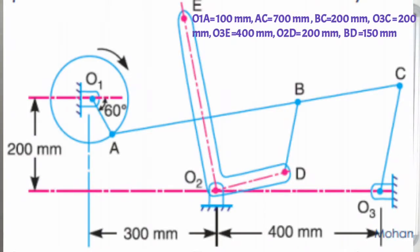We join AC and O3C. BC distance is 200 millimeters, so at 4 centimeters from point C we mark point B. For point D, distance BD = 150 millimeters, so we take B as center and mark an arc. Then with O2 as center and O2D = 200 millimeters, we mark another arc — the intersection gives point D. The angle D-O2-E is 90 degrees, completing the diagram.